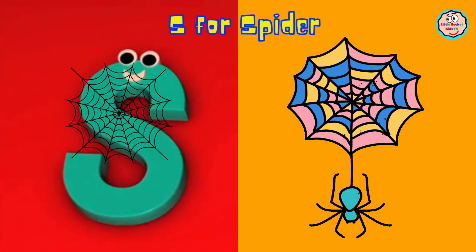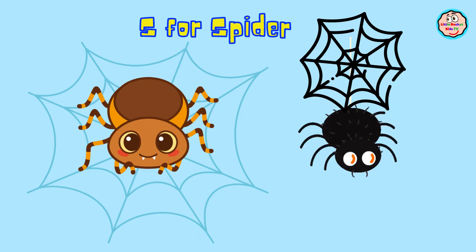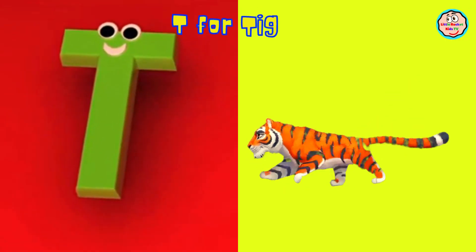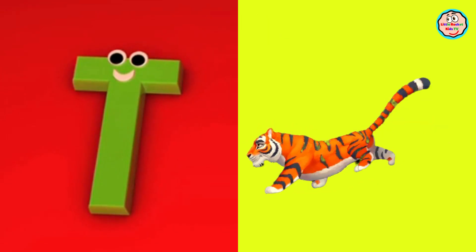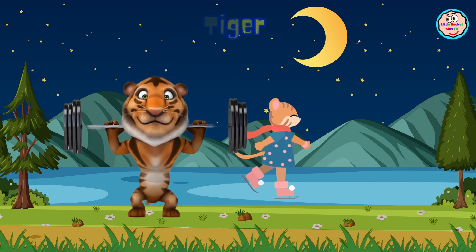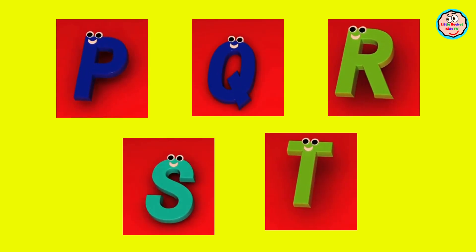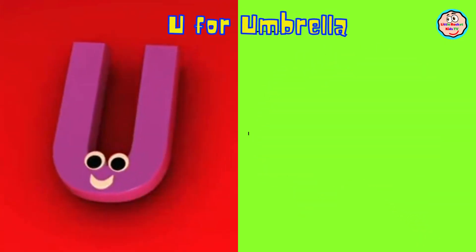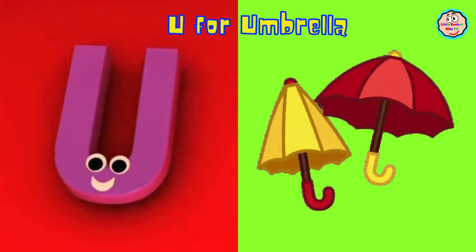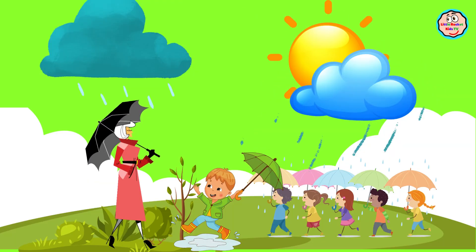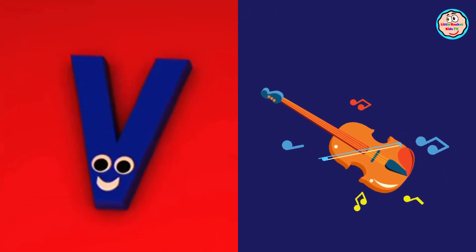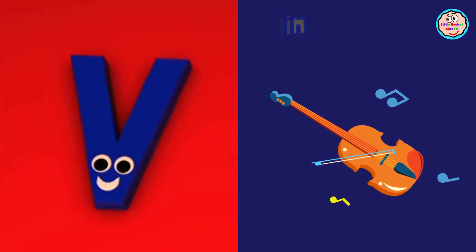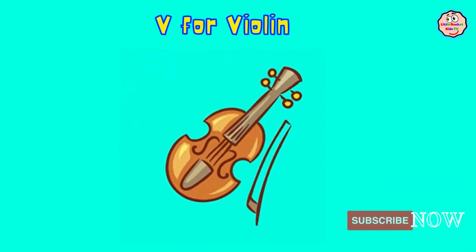S is for Spider, Spider, S-Spider. T is for Tiger, T-T-Tiger, T-Tiger. U is for Umbrella, U-Umbrella. V is for Violin, V-V-Violin, V-Violin.